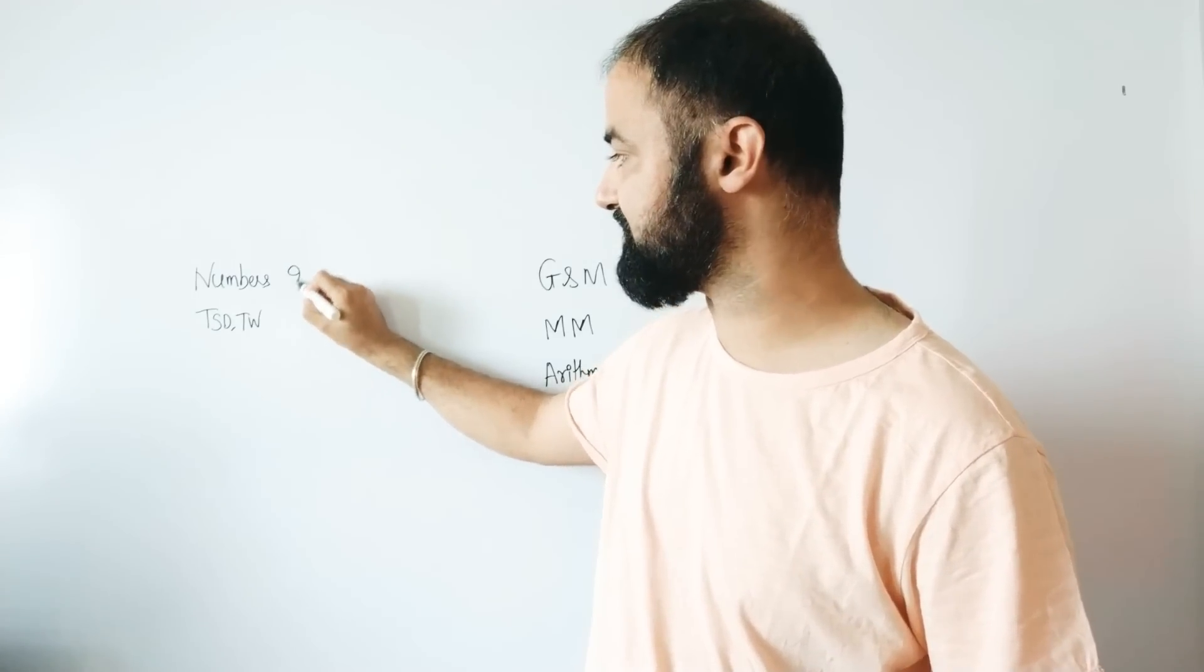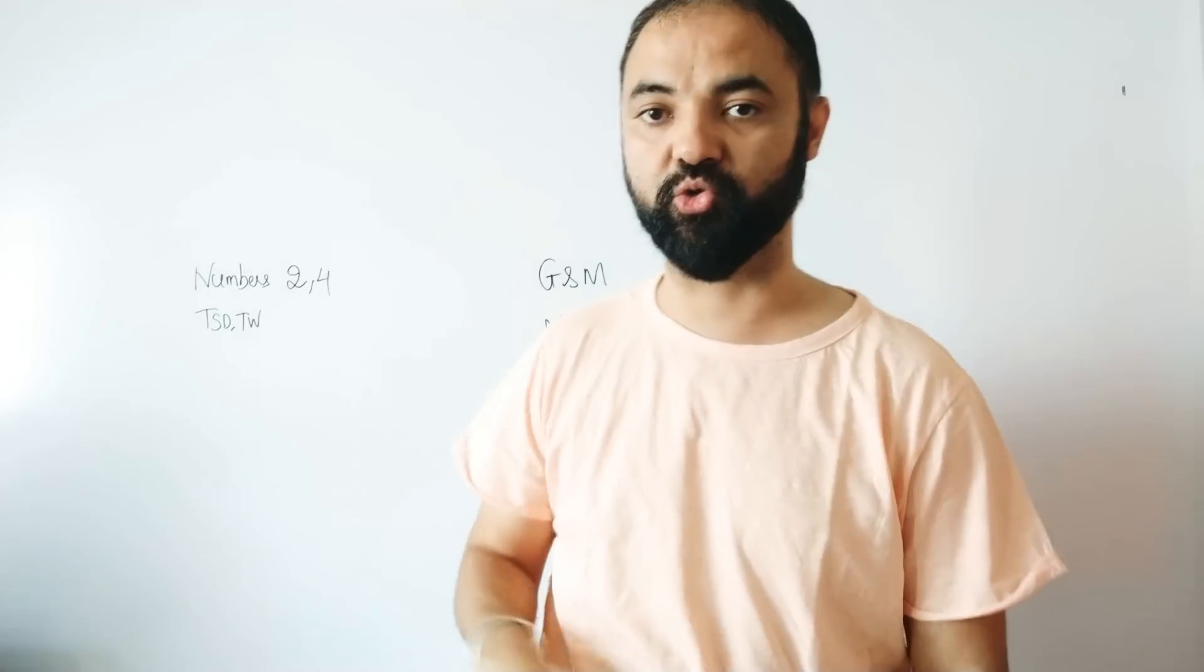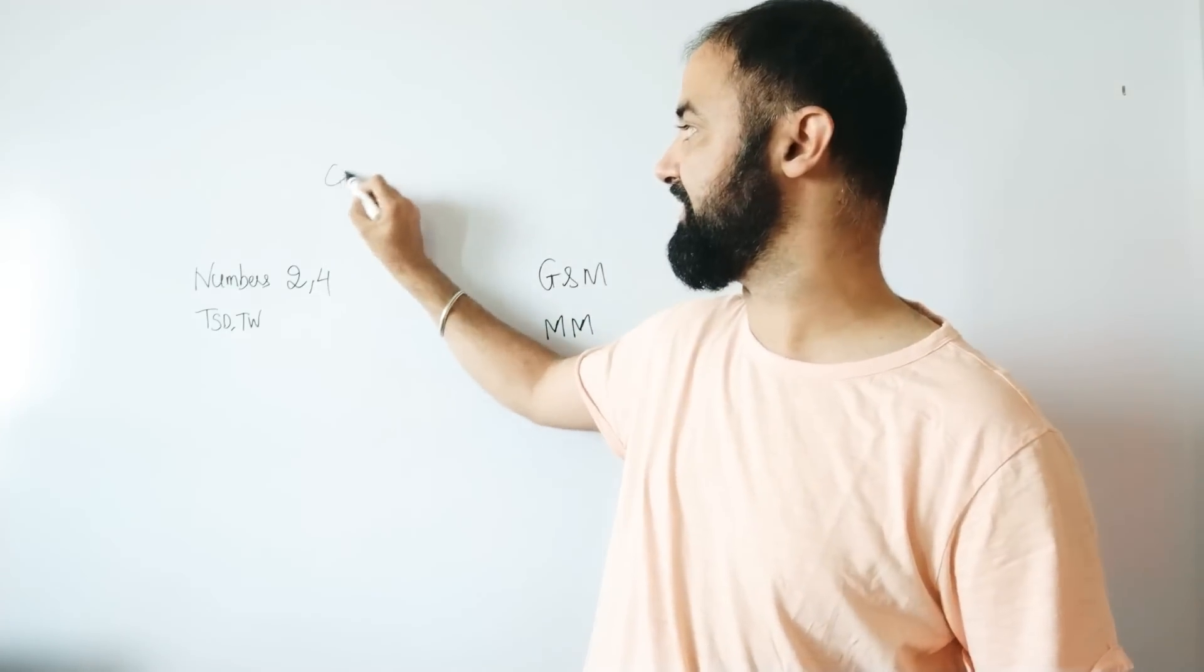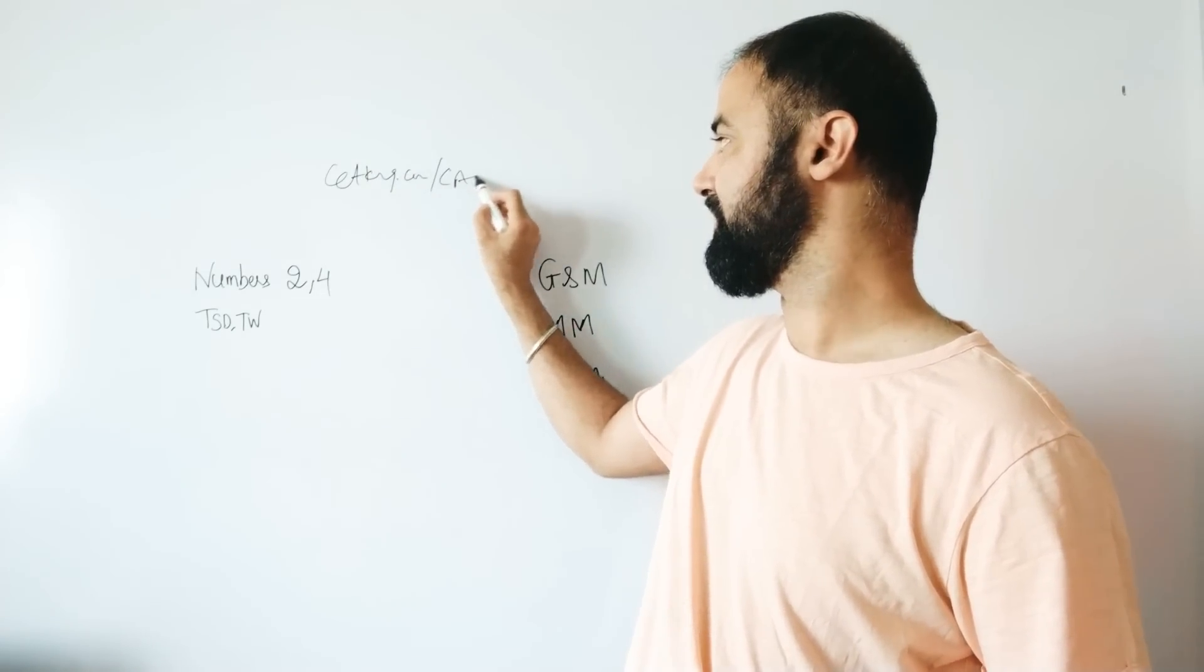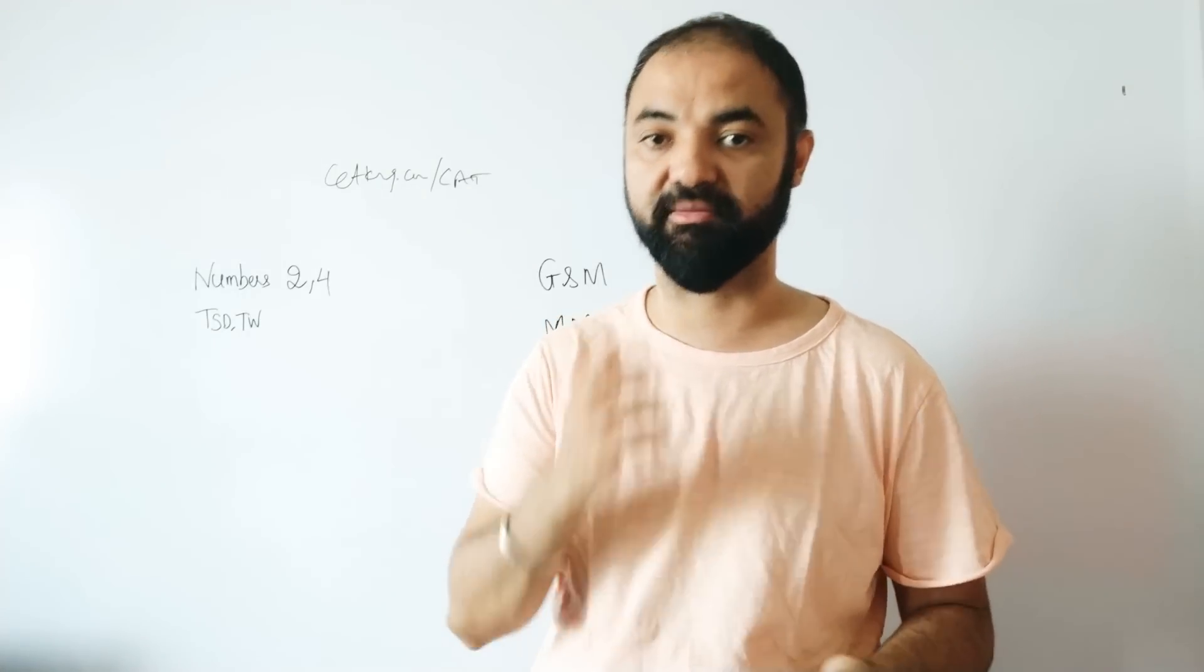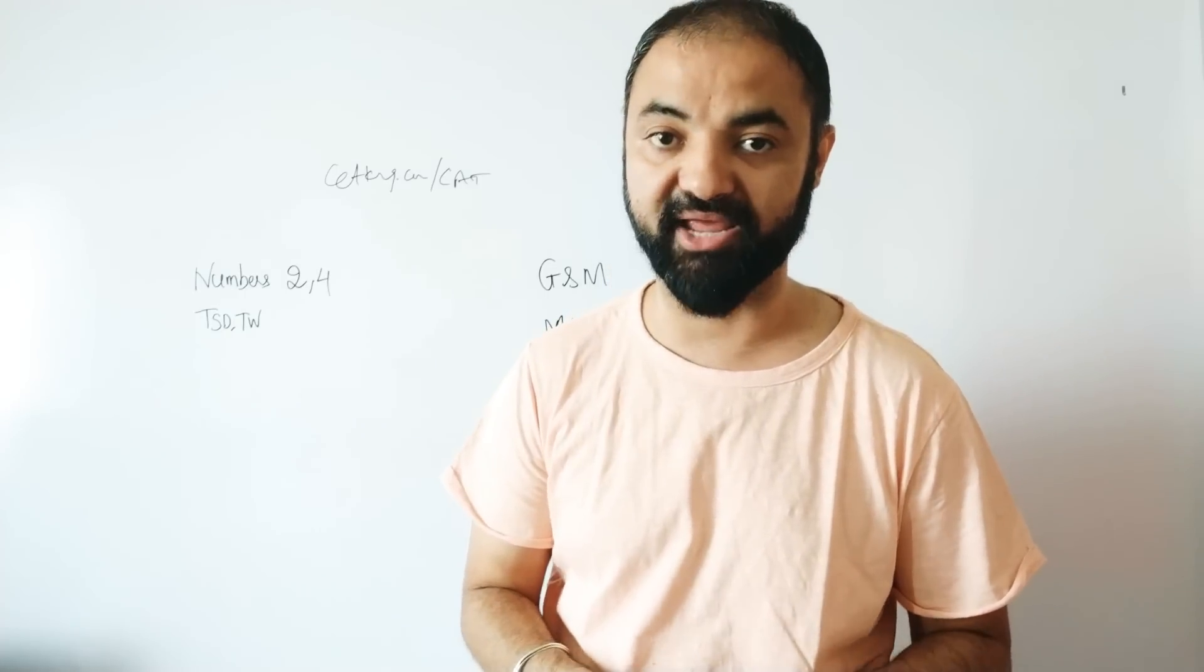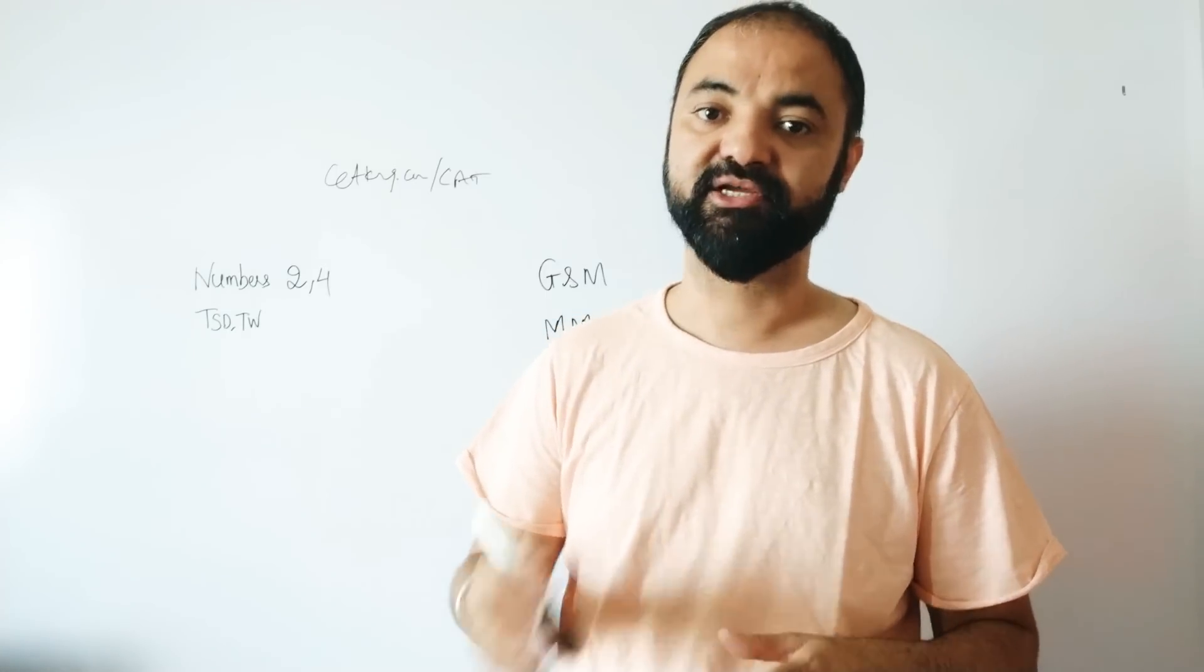Numbers. Last year had two questions in slot one and four questions in slot two. If you're talking about CAT 2018 paper, first of all, please download the CAT paper because you need to know what kind of questions are coming. You might not be able to solve them right now, but you need to understand the question types so you can plan accordingly. Numbers is two to four questions.